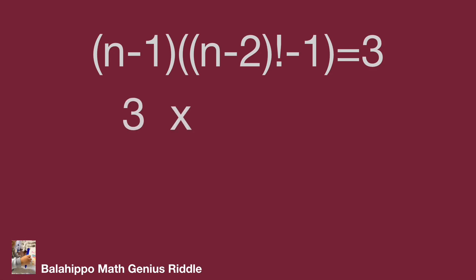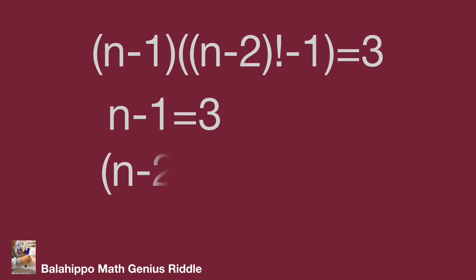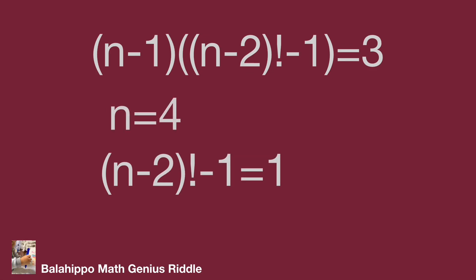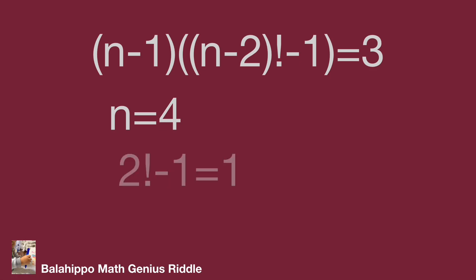For the case 3 times 1: n minus 1 equals 3 and (n minus 2) factorial minus 1 equals 1, giving n equals 4. Substituting n equals 4 into the second equation gives (4 minus 2) factorial minus 1, which equals 2 factorial minus 1, which equals 1. So n equals 4 is the answer.